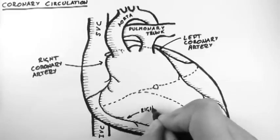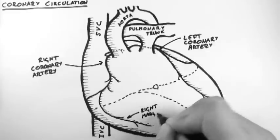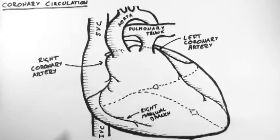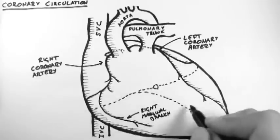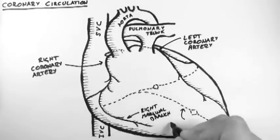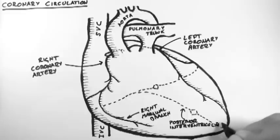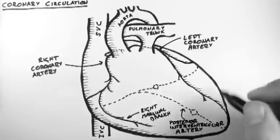Down here we have the right marginal branch, and posteriorly we have the posterior interventricular artery. These last two branches, or arteries, are branches of the right coronary artery.